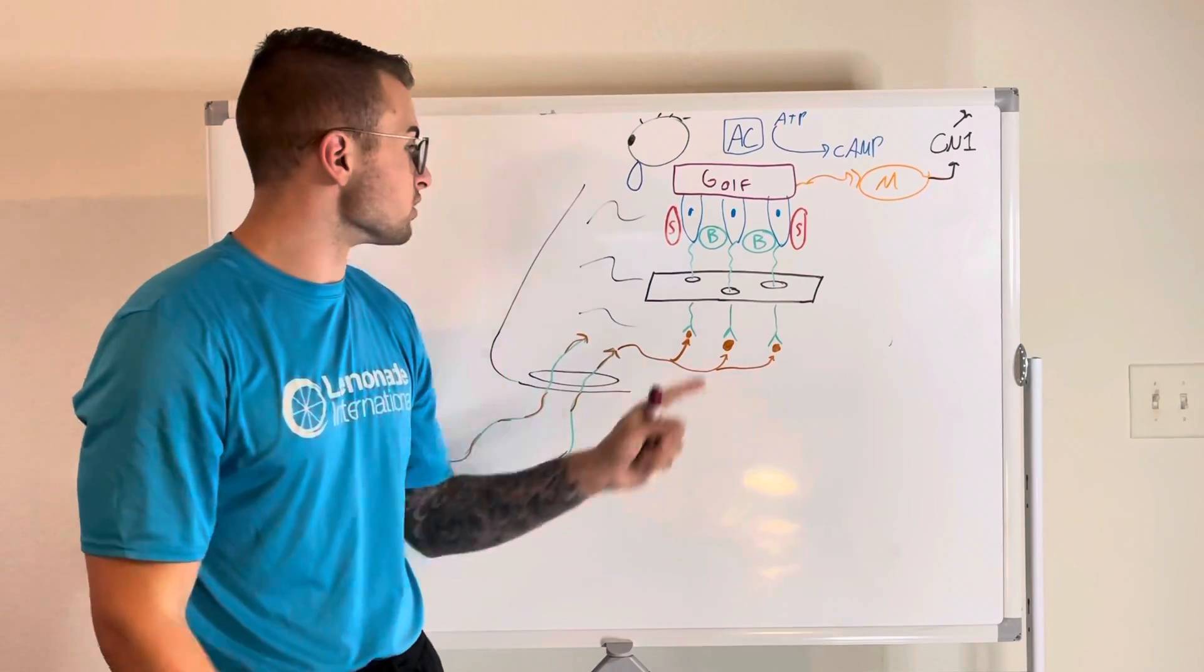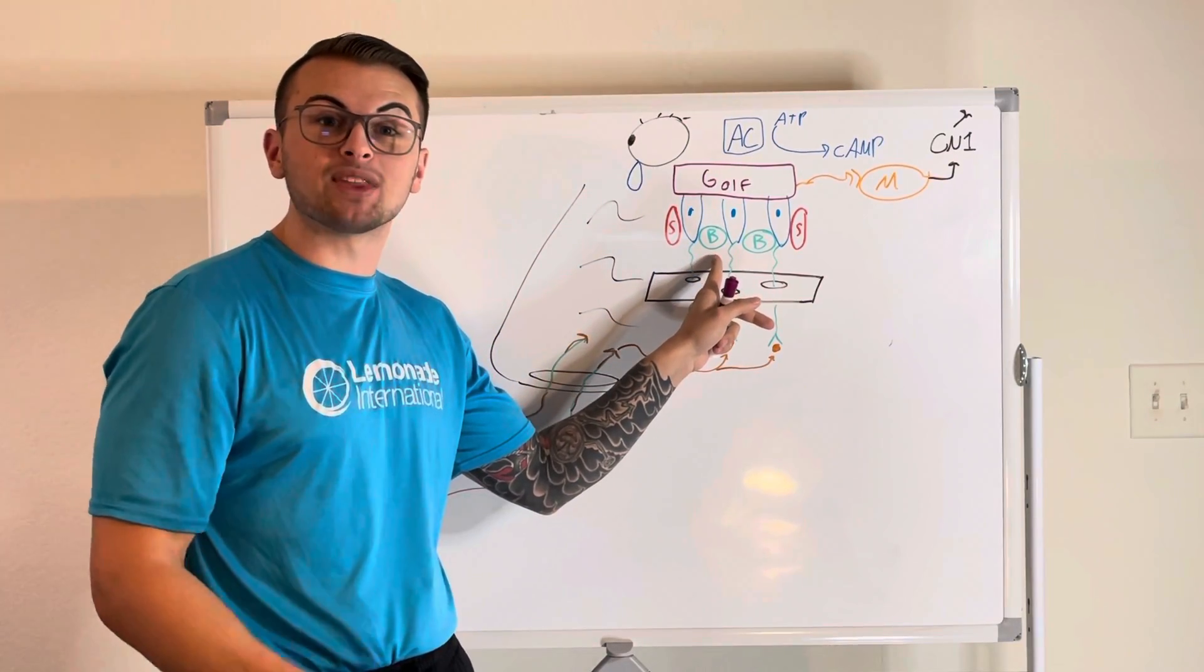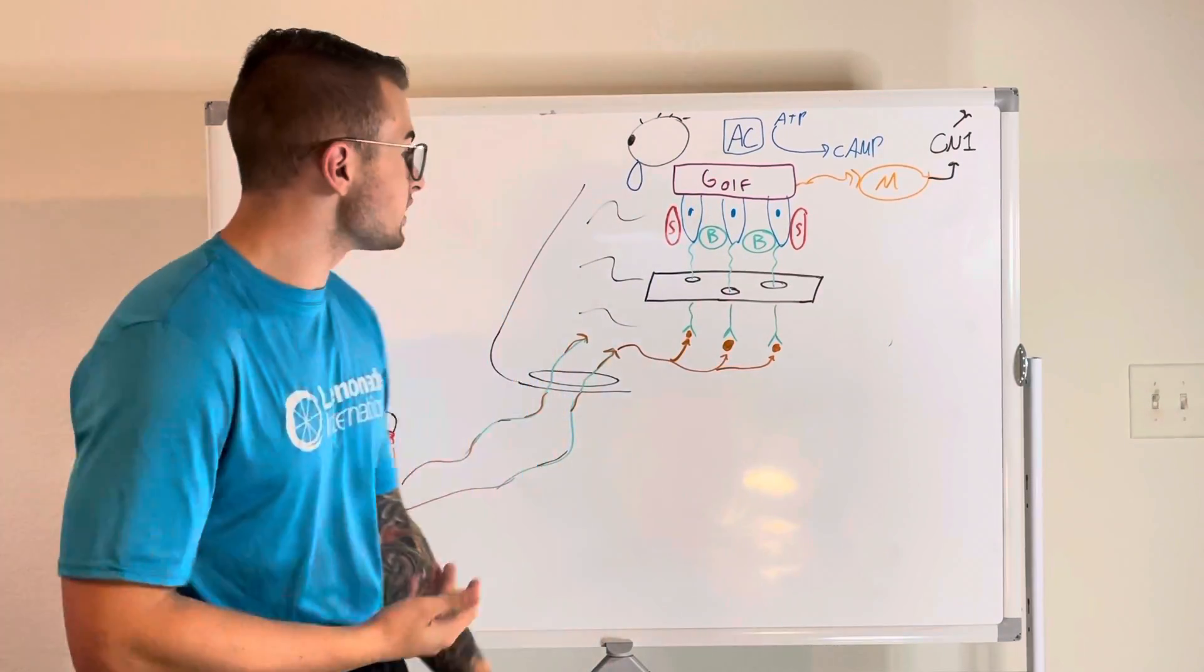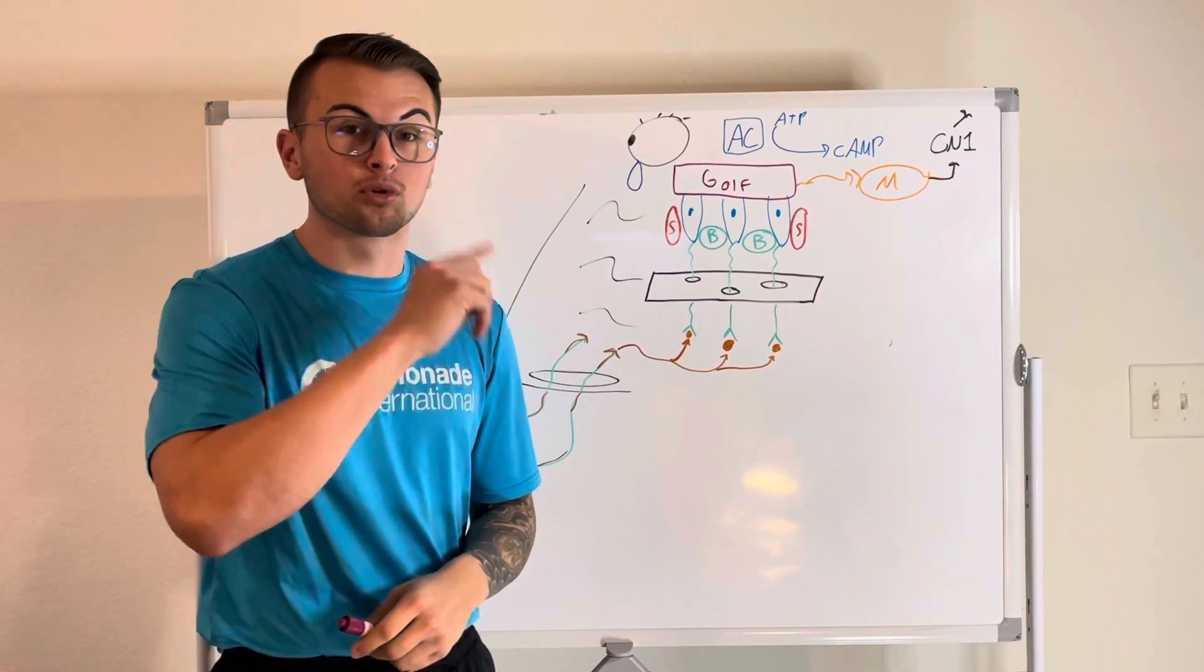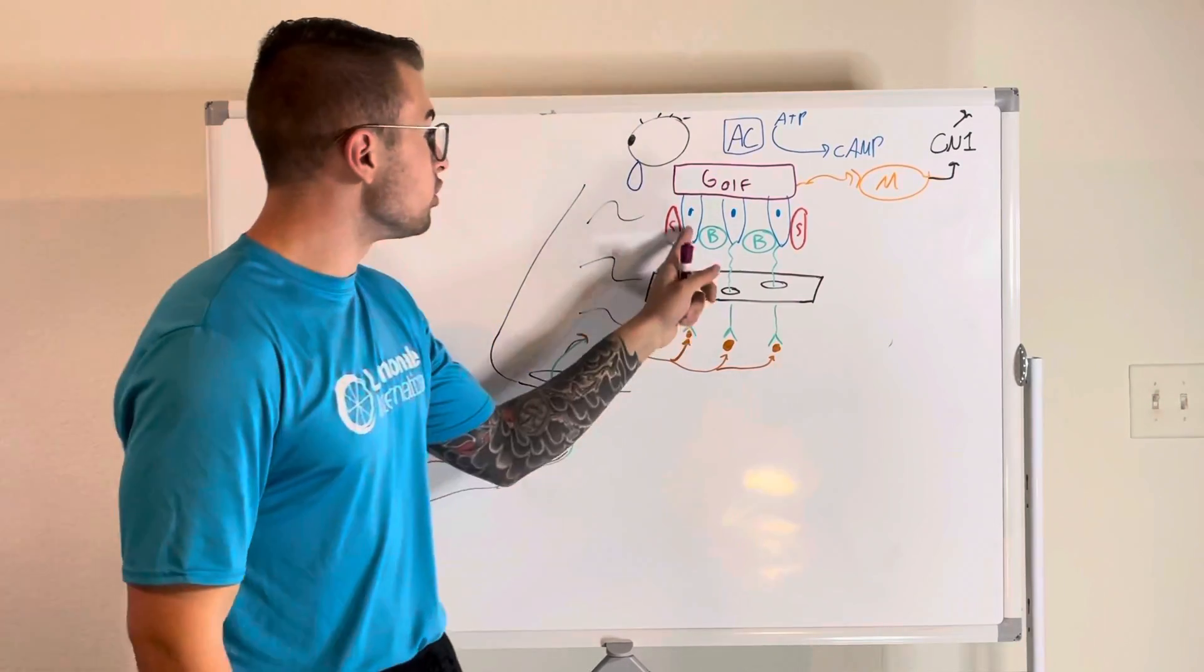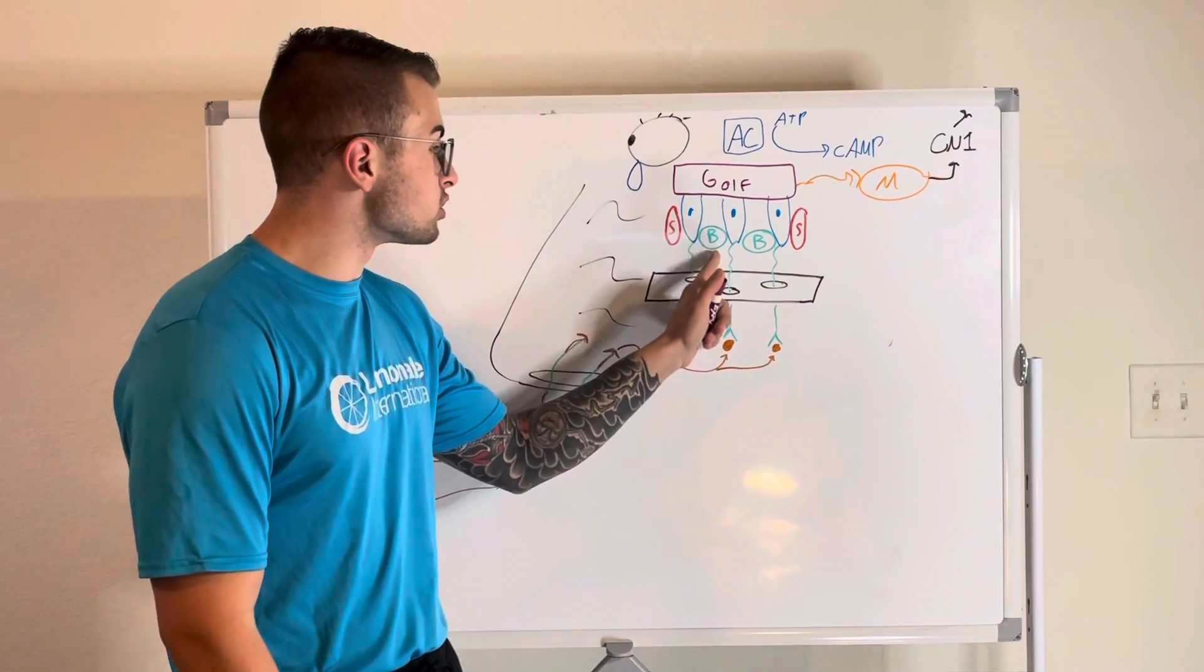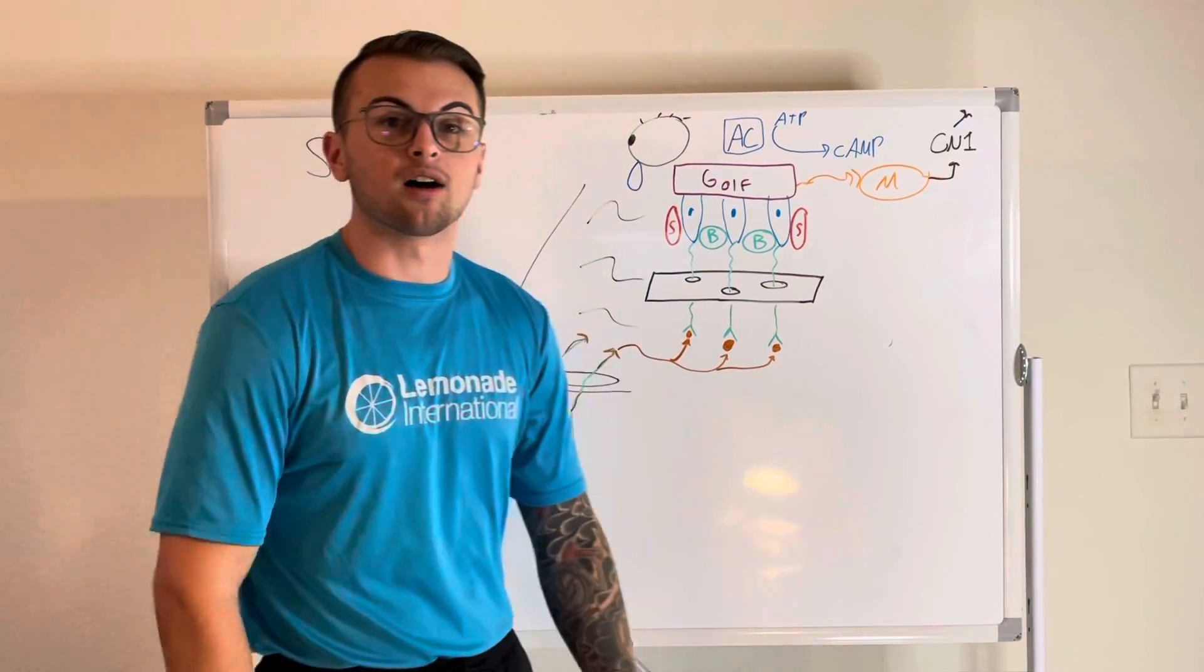Basal cells are at the base of our epithelium and they actually are undifferentiated stem cells. So these basal cells, actually, they keep on proliferating, remember proliferating, proliferating, they keep on generating new versions of themselves and will eventually become new olfactory receptors. So we can start to increase the amount of olfactory receptors once these die off.